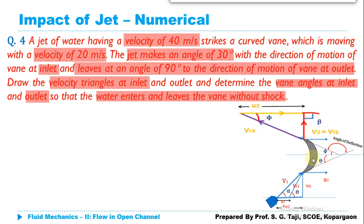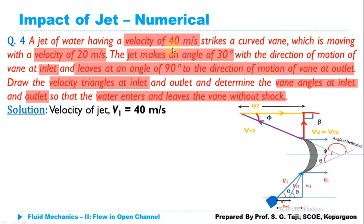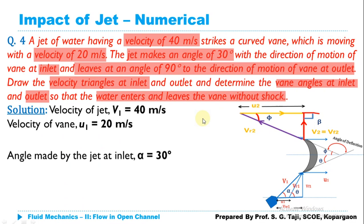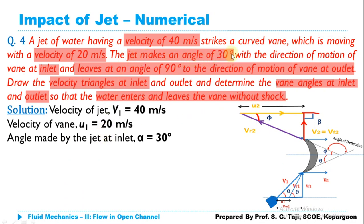To prevent shock and ensure smooth entry, theta must equal the angle made by the relative velocity at inlet, and phi must equal the angle made by the relative velocity at outlet. Given data: V1 = 40 m/s, u1 = u2 = 20 m/s, alpha = 30°. The jet leaves at 90° to the direction of motion, so beta = 90°.